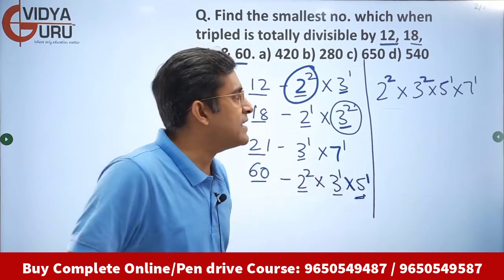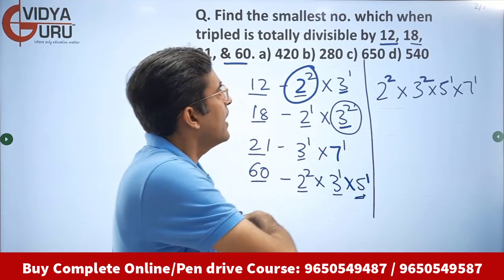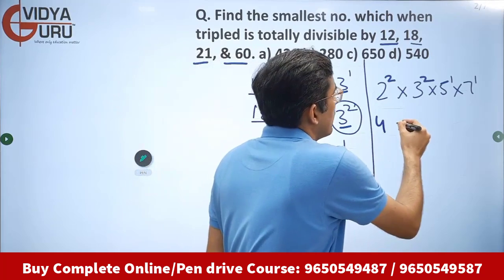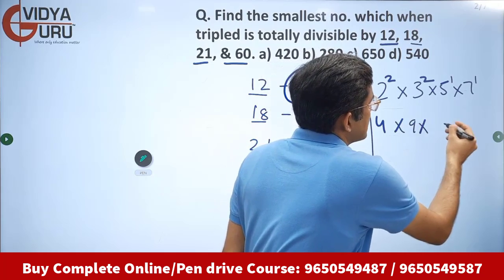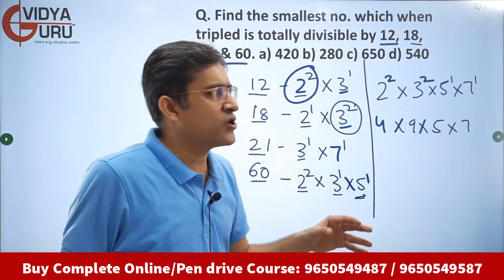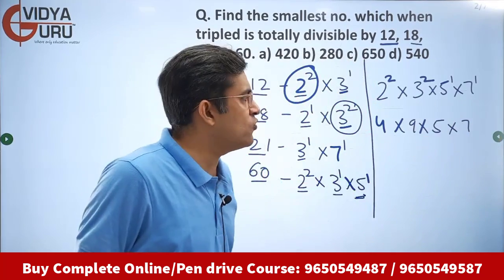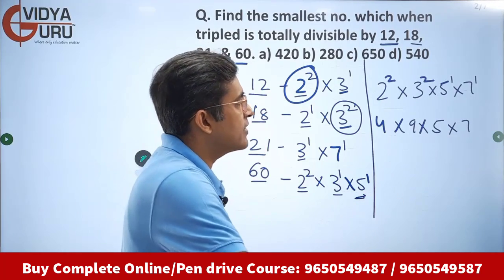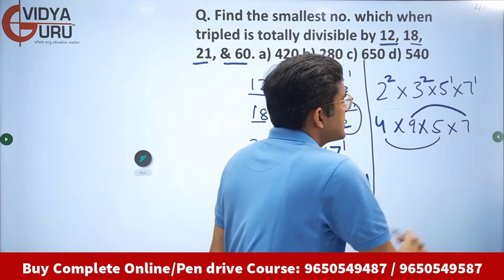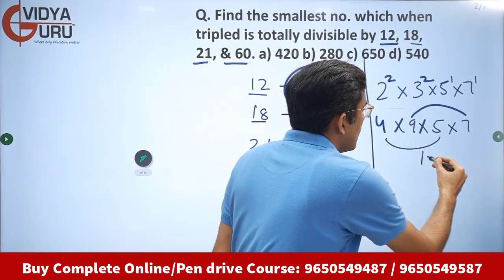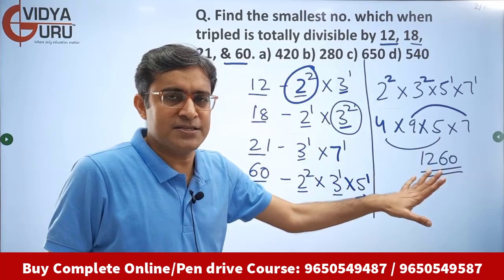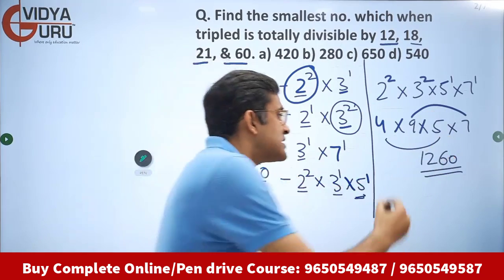Now let's simply multiply them to get the LCM. 4 times 9 is 36. Then 36 into 5 into 7 — so 4 into 9 into 5 into 7. 5 fours are 20, 9 sevens are 63, 63 into 20 gives us 1260. So 1260 is the LCM.